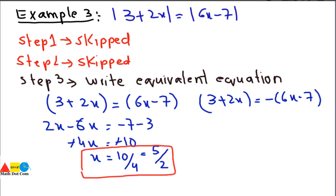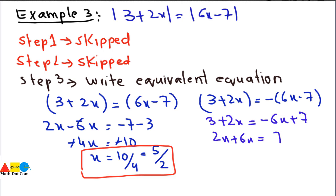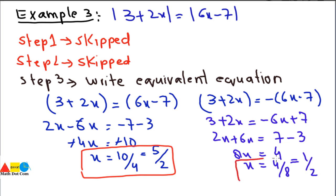Solving the second equation 3 + 2x = −6x + 7: rearranging gives 2x + 6x = 7 − 3, so 8x = 4, and x = 4/8 = 1/2. The second root is x = 1/2.